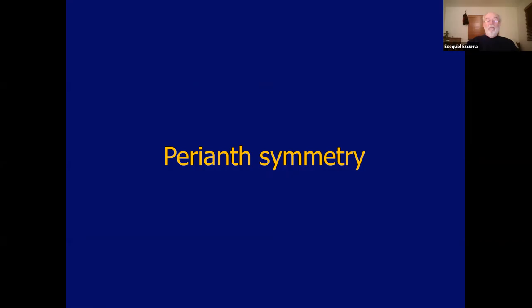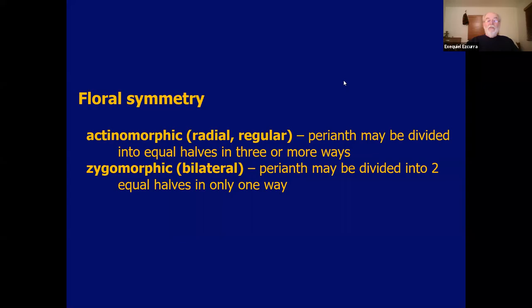Let me talk a little bit about floral symmetry — this is really important. It has always drawn the attention of botanists that some flowers have all their flower parts — petals, sepals, stamens, and pistils — all radiating around a central axis. Flowers with that characteristic are known as actinomorphic: actinos meaning star, morphic meaning shape — so with the shape of a star. Also known as radial symmetry or regular symmetry. Flowers are actinomorphic when the perianth may be divided into equal halves in three or more ways.